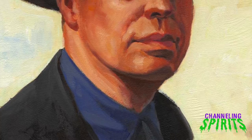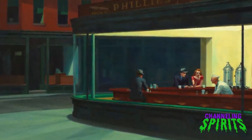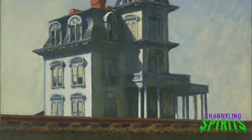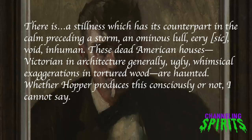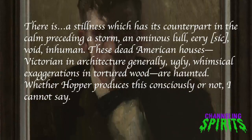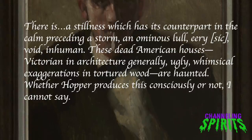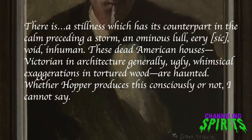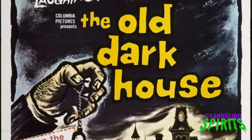One of the best depictions of the Second Empire's desolation came from American artist Edward Hopper. Hopper is now most known for his work 'Nighthawks,' but in 1925 he painted 'House by the Railroad.' Devoid of people, the lonely house sits quietly as the sun sets on it. Hopper's friend and contemporary Guy Pène du Bois said of the piece: 'There is a stillness, a stillness which has its counterpart in the calm preceding a storm and an ominous lull — eerie, void, inhuman. These dead American houses, Victorian in architecture, generally ugly, whimsical exaggerations and tortured wood, are haunted.'